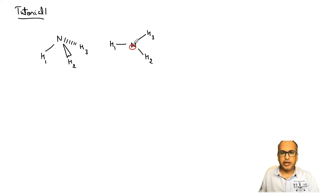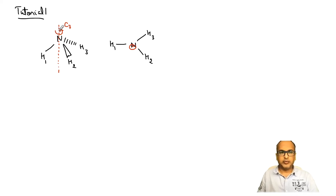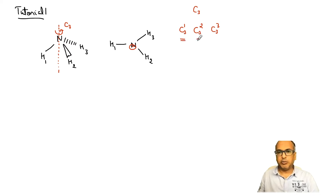Looking from the top helps me identify that there is a proper axis of rotation with C3 order, with n equal to 3, which is perpendicular to the plane of the board. This is my C3 axis, and this is the only proper axis of rotation present in this molecule. The corresponding operations will be C3 to the power 1, C3 to the power 2, and C3 to the power 3. C3¹ and C3² are independent operations, but C3³ is actually equivalent to E, the identity.